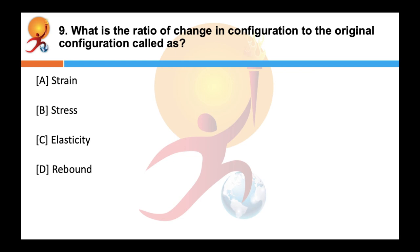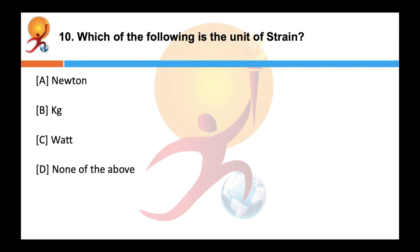What is the ratio of change in configuration to the original configuration called as? Correct answer is strain. There are basically three types: linear, volumetric, and shearing. What is the unit of strain? Correct answer is D — none of the above. Strain is a ratio of two like quantities; hence it has no dimensions and no units. Strain equals change in configuration upon original configuration.